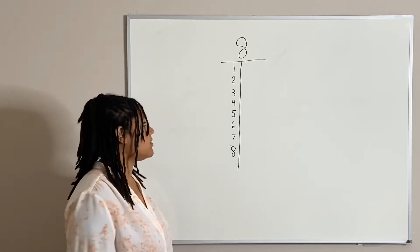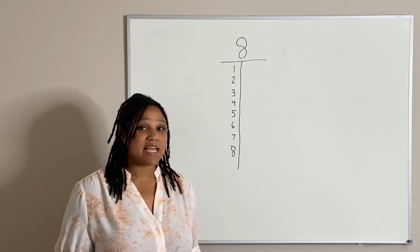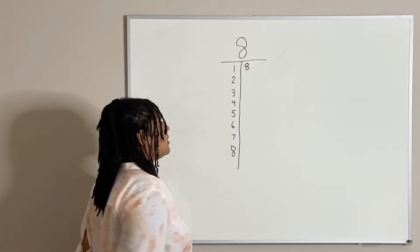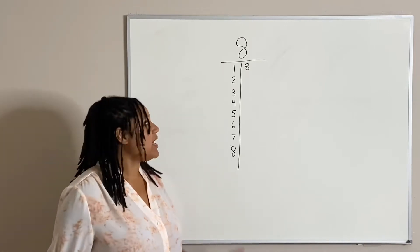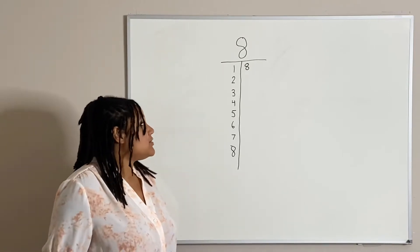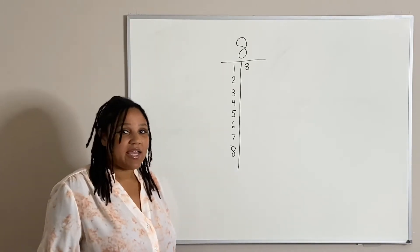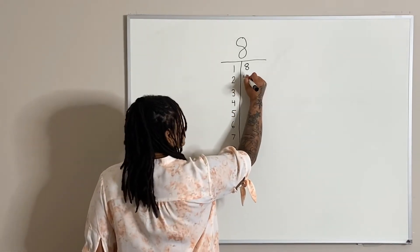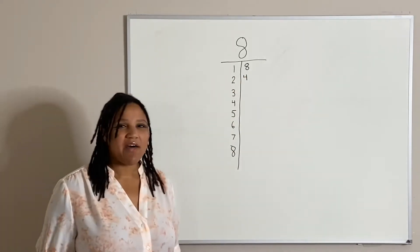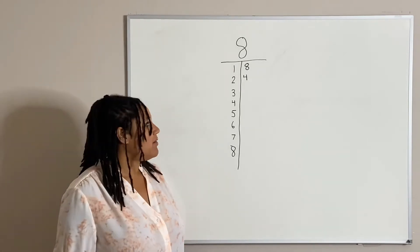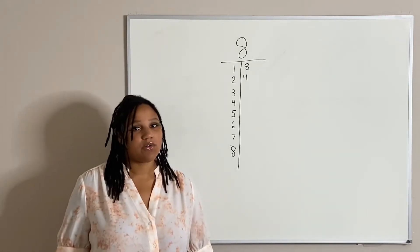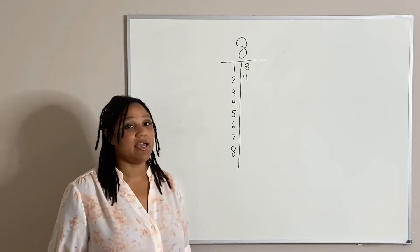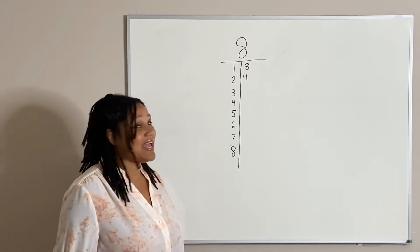So let's look at our first number. Well, one times eight is eight, so I'm going to go ahead and write the number eight. What about the number two? Well, two times four is eight, so I'm going to write the number four beside the two. What about the number three? There's no other whole positive number that I can multiply three by to give me the number eight.